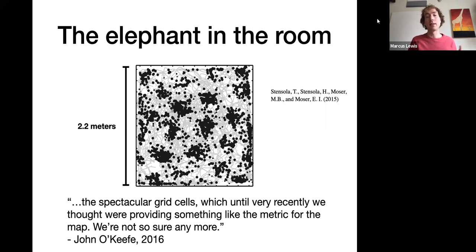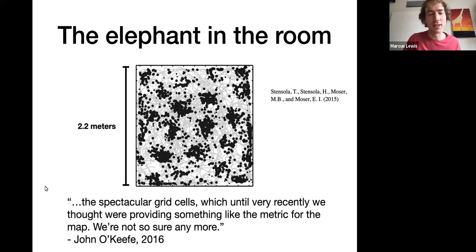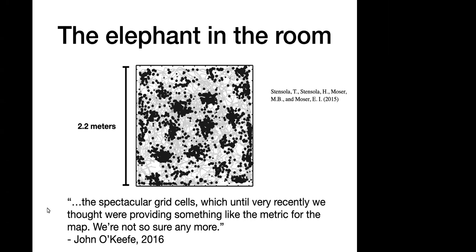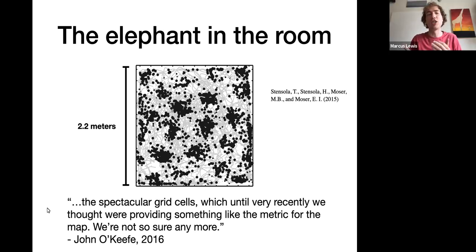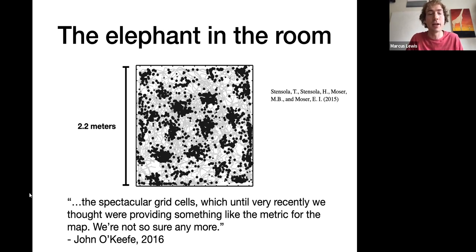Once you use larger boxes, and in a number of other situations, you start to see grid cells being not as regular as we'd like them to be. A common sentiment among people who study grid cells is that we're not sure it's providing a metric, because it's just messier than we'd like. From a 2016 presentation, the quote was: 'the spectacular grid cells, which until very recently we thought were providing something like a metric for the map - but we're not so sure anymore.'